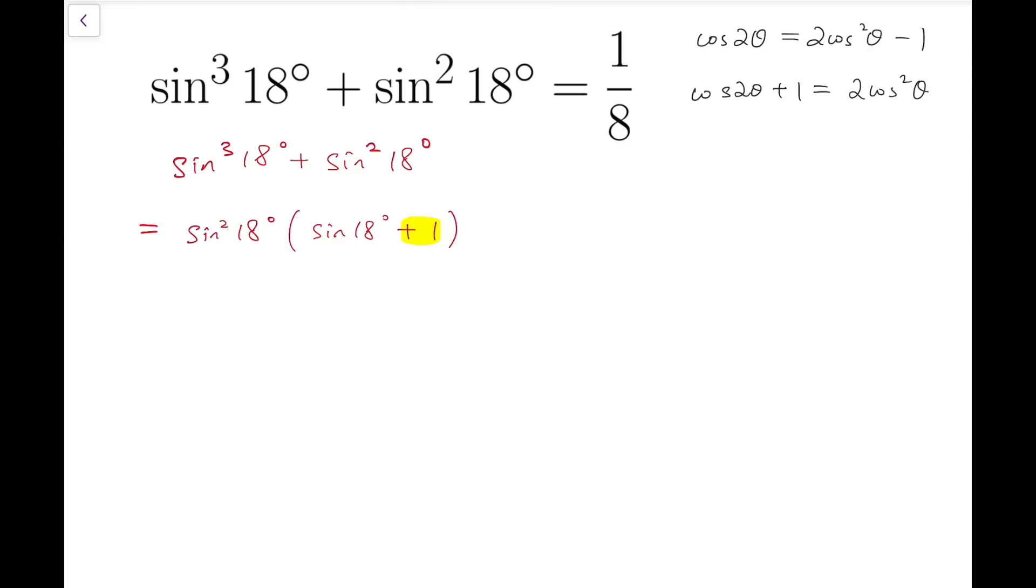Then, if I can rewrite sine of 18 degrees plus 1 into something like this, then my expression will simply be product of things. So to do this, I am going to rewrite sine into cosine by making use of the fact that cosine θ equals sine of 90 degrees minus θ.